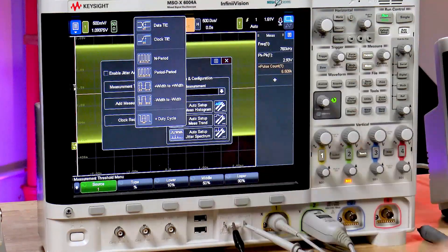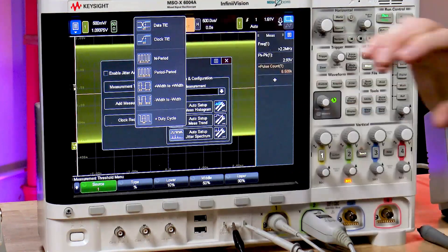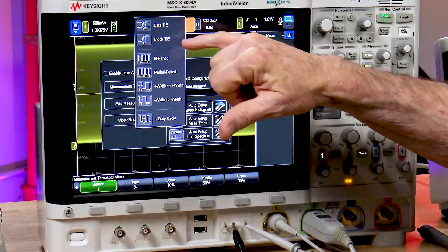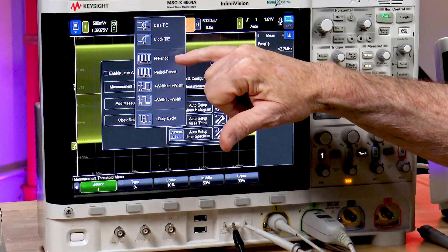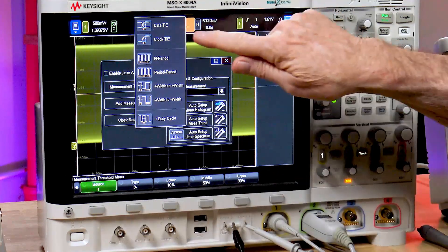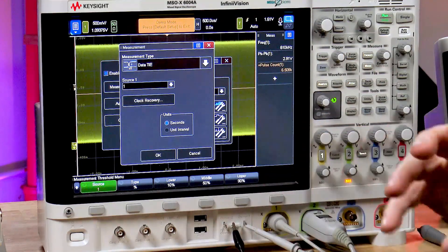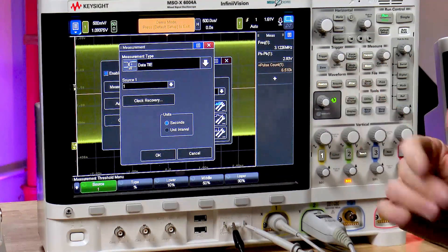And there's various different types of jitter. There's data TIE. TIE stands for time interval error, clock jitter, period jitter, period to period jitter. The most common is data TIE. So it's going to measure the timing error on all the data edges.